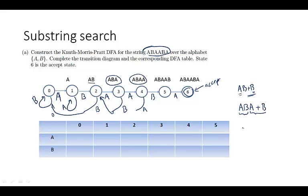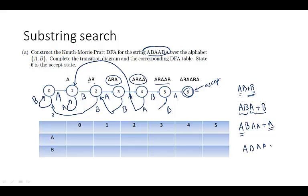Suppose you're in state 4 and see an A. You have seen ABAA, and now you see another A. The longest suffix which is also a prefix is just A, so you should go back to state 1. Now if you're in state 5 and you see a B — you have seen ABAAB — and we look for the longest suffix which is a prefix of this, but there's none, so you go back to state 0.